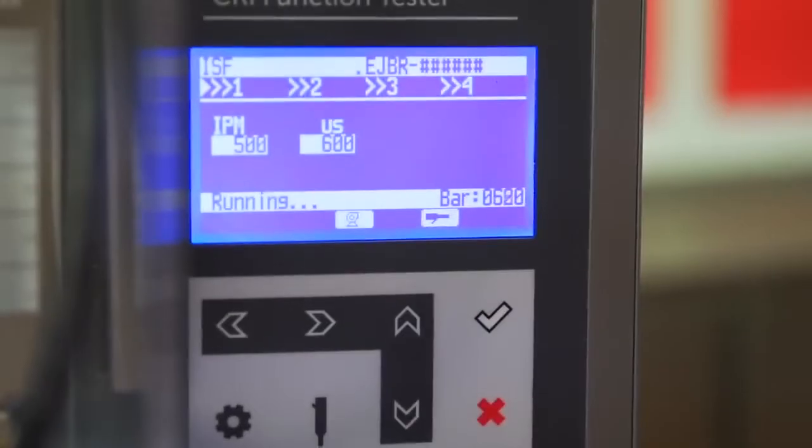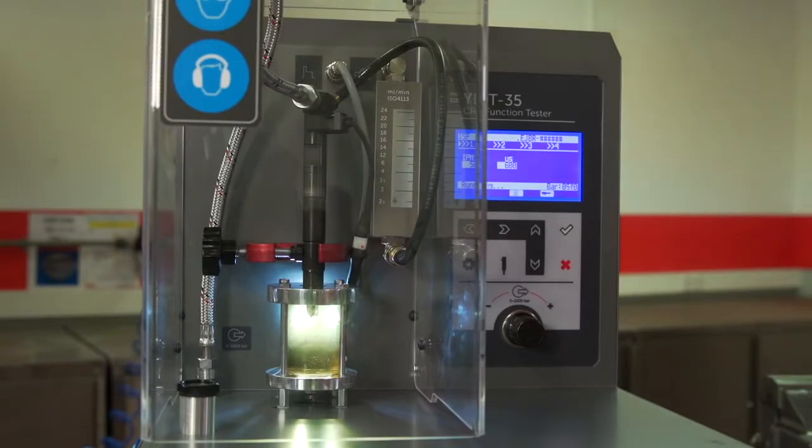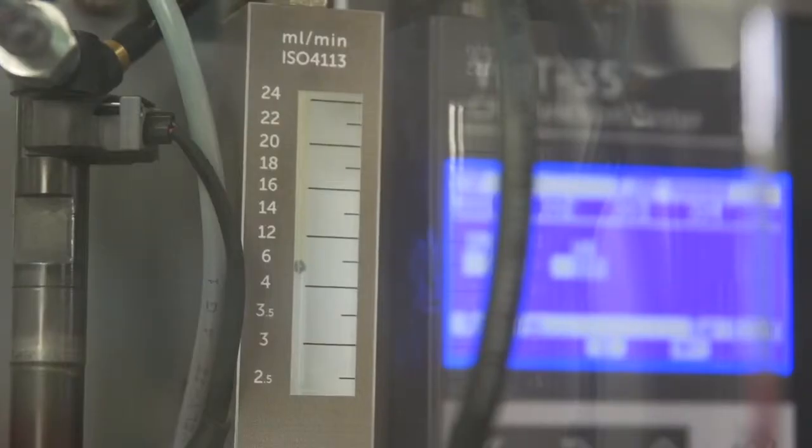Set the pressure to 600-700 bar and allow the injector to run for one minute to ensure the air is purged from the back leak. The maximum pressure achievable will depend on the supply pressure.